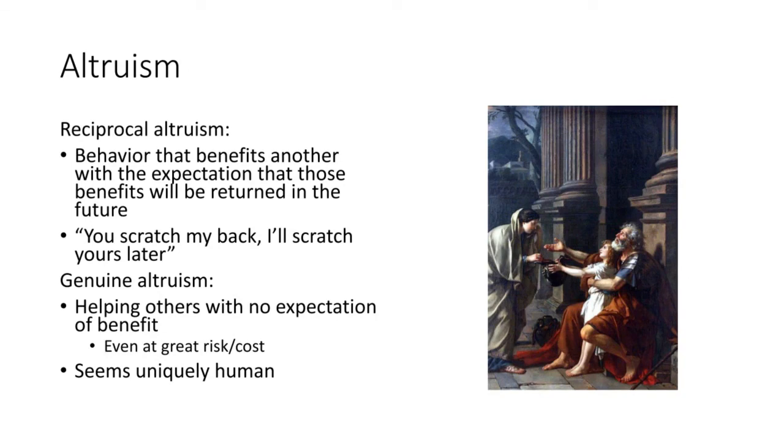Genuine altruism seems to be uniquely human. So that's helping others with no expectation of benefit, often at great risk to yourself. The example from the textbook is a man who jumped on the tracks of a subway to save somebody who had fallen in because of an epileptic seizure. Basically, he kind of held them down so that the train could pass over both of them with just about an inch to spare. So he saved his life at great risk to his own. And so that would be considered genuine altruism, whereas reciprocal altruism would be expecting some benefit.